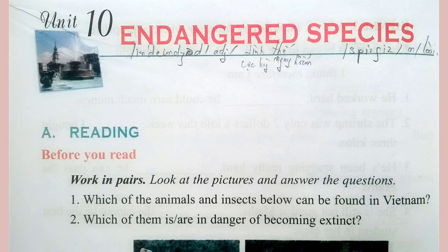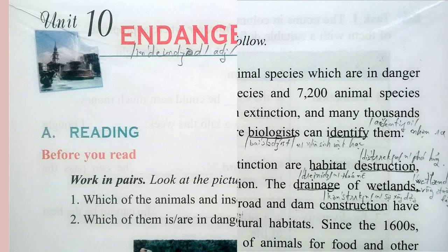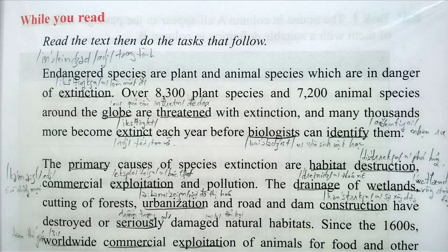Unit 10: Endangered Species. Reading — while you read, read the text then do the tasks that follow, page 107. Endangered species are plant and animal species which are in danger of extinction. Over 8,300 plant species and 7,200 animal species around the globe are threatened with extinction, and many thousands more become extinct each year before biologists can identify them.